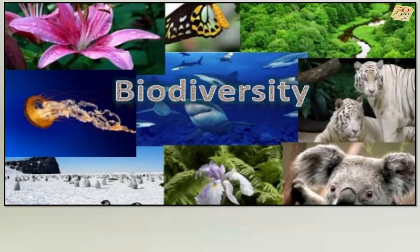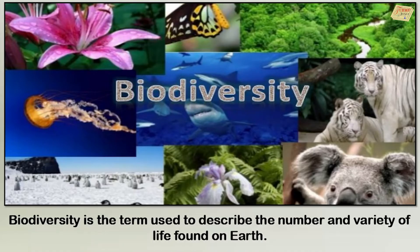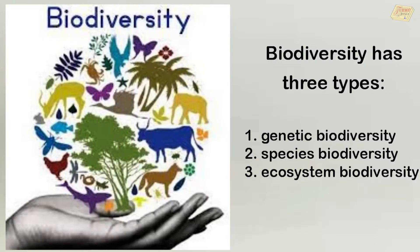What is biodiversity? Biodiversity is the term used to describe the number and variety of life on Earth. Biodiversity has three types: genetic biodiversity, species biodiversity, and ecosystem biodiversity.